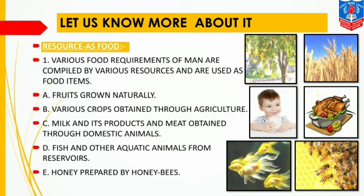Various food requirements of man are fulfilled by various resources which are used as food items. Each and every person's food requirements are different, so these are fulfilled by various resources available in nature. For example, fruits grown naturally are able to satisfy our need and are called resources.